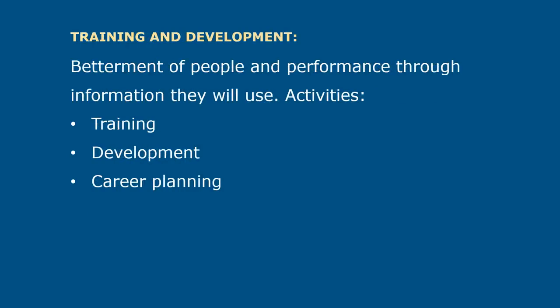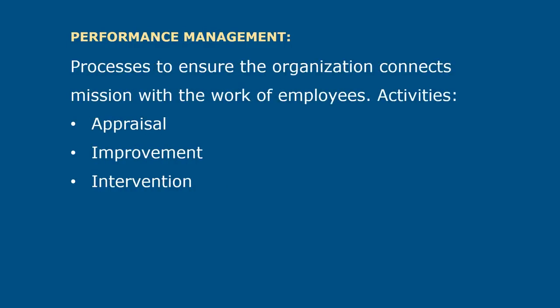Training and development is about the betterment of people and performance through information they will use. The activities of training and development include training, development, and career planning. Performance management encompasses the processes to ensure the organization connects its mission with the work of employees. The activities of performance management include performance appraisal, improvement, and intervention.